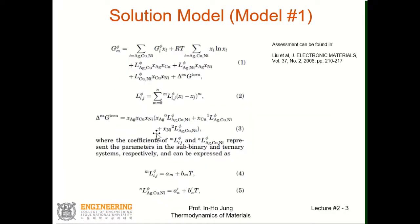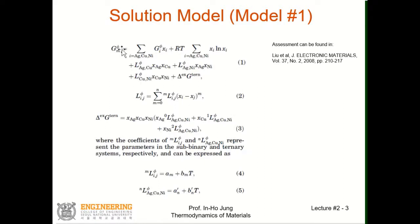If you look at Liu et al.'s paper, they used both FCC and BCC with model number one — a one-sublattice random mixing model for both FCC and BCC solution. This is the general description of their Gibbs energy for the solution phase. The molar Gibbs energy Gm for the solution, where phi means a certain solution, in this case FCC or liquid.